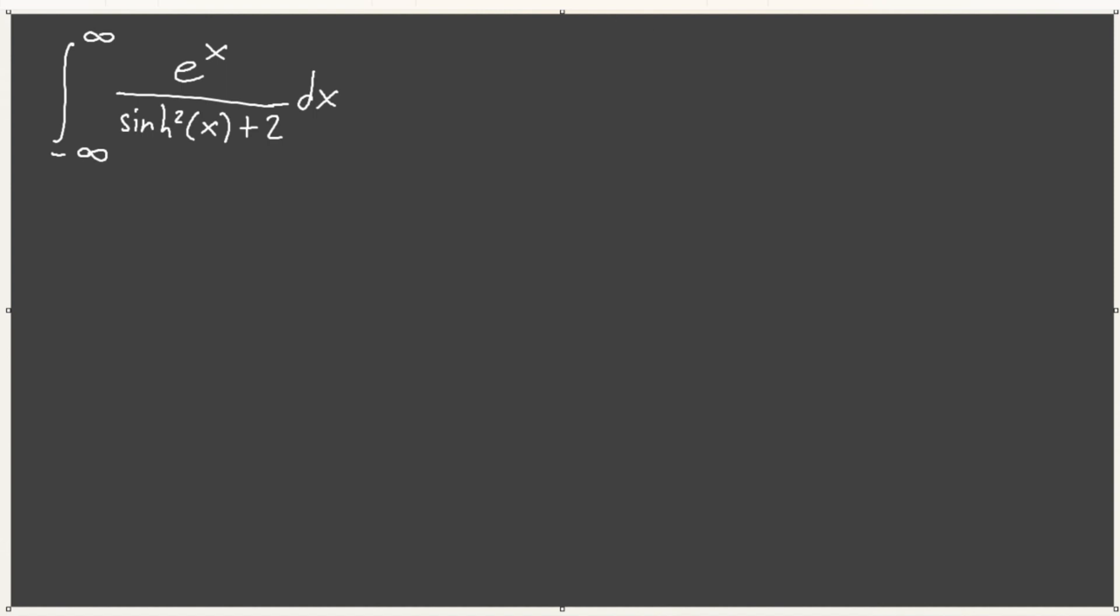But notice, when I do a ninja substitution, I'll get plus e to the negative x, which would equal sinh square plus 2, then I'll get something like cosh. And maybe this is a u substitution integral. And that's what we're going to do. So, we'll let u equal negative x, and we get e to the negative x. This stays the same. It's an even function. And then, we add these two together.